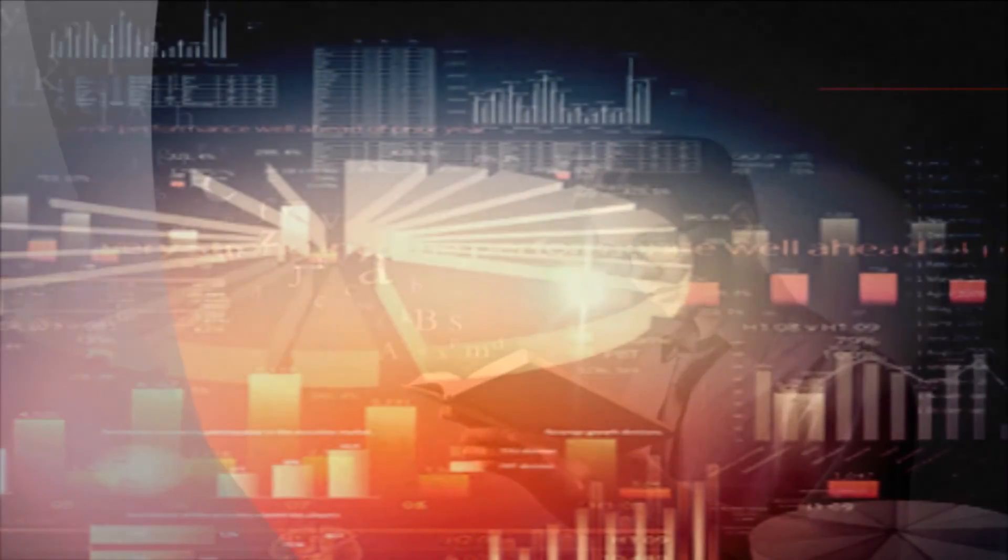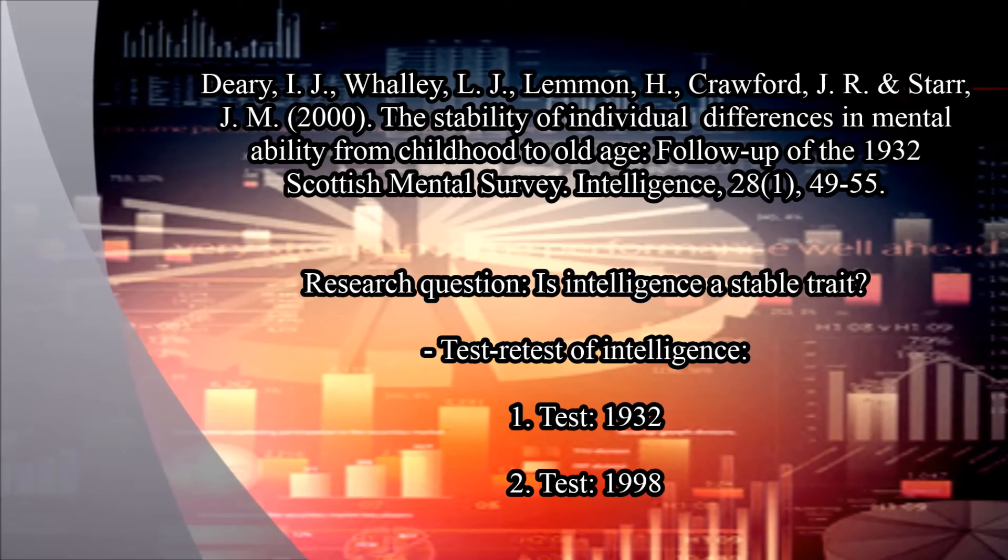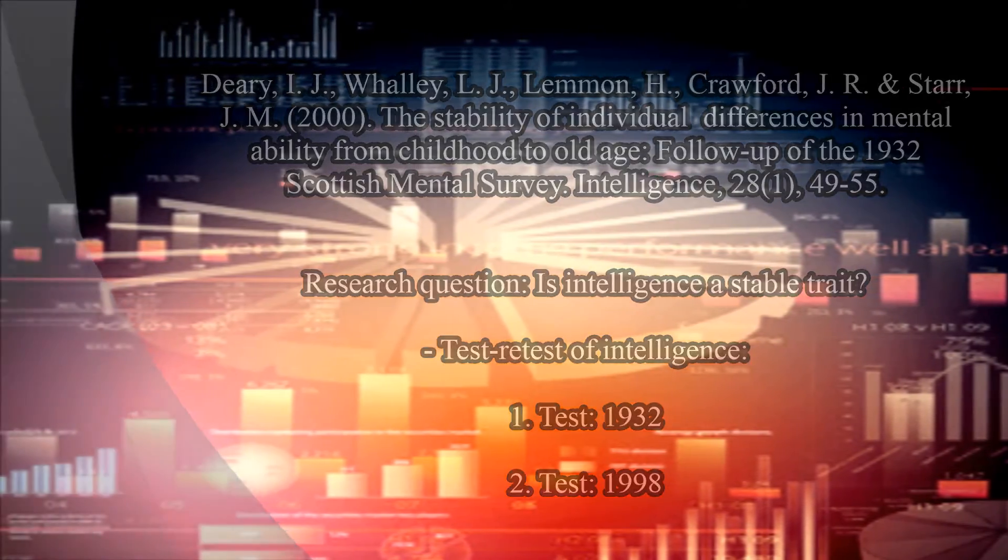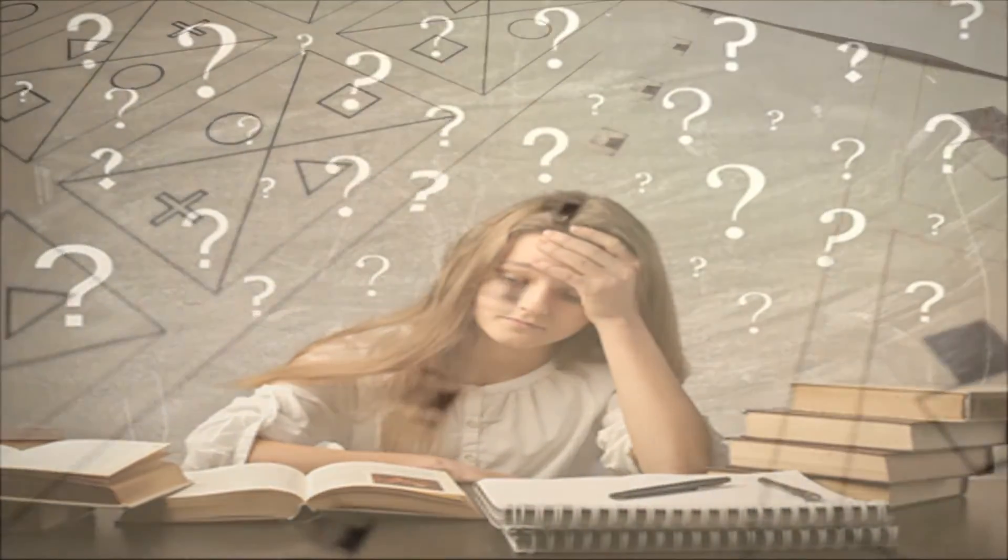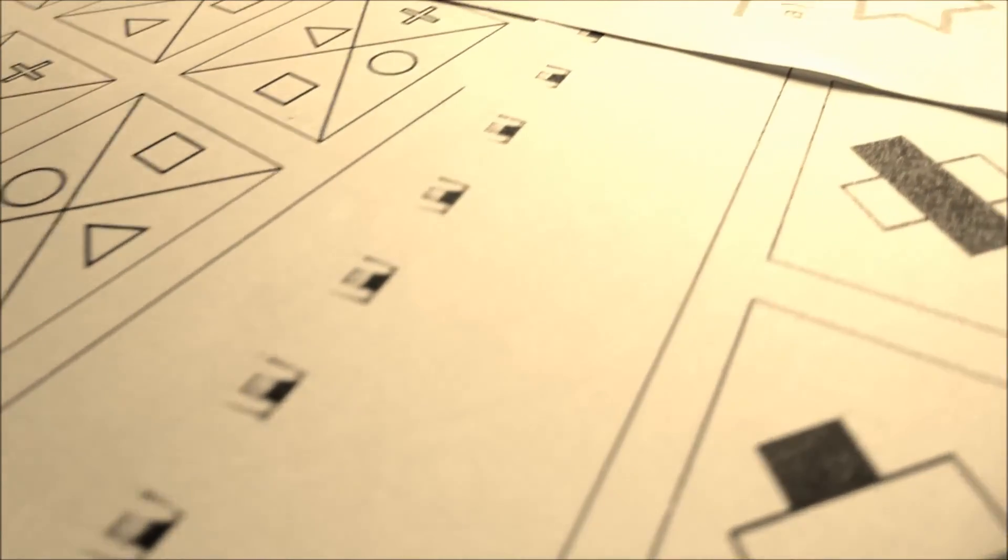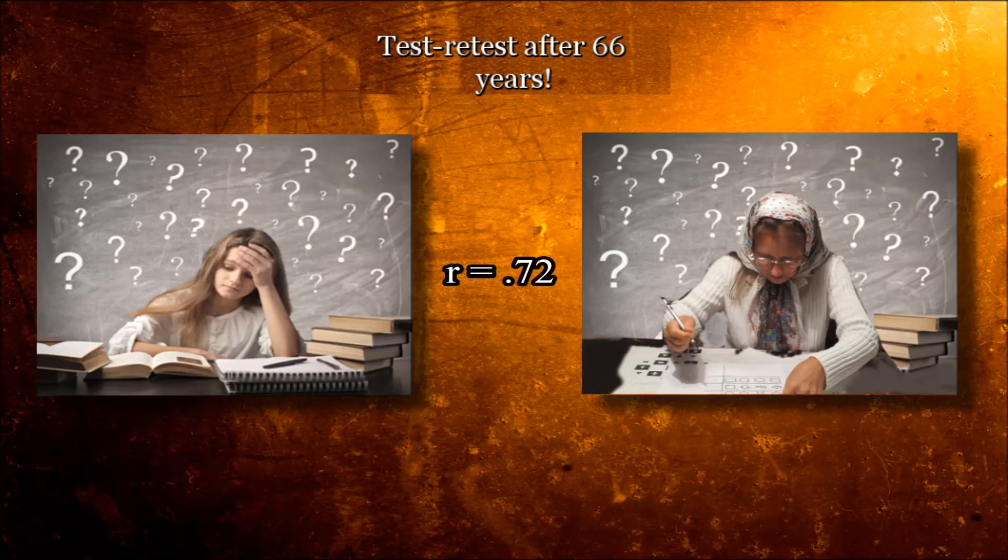For example, in the study from Deary and colleagues published in the year 2000, the so-called Moray House Test, a verbal intelligence test, was presented to people at the age of 11. And 66 years later, when participants were on average 77 years old, the test was presented again. And there was an impressive correlation between the results they scored at the age of 11 and the results they scored at the age of 77. So intelligence is a quite stable trait.